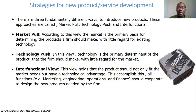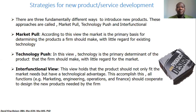The last one is the functional view, where it is a combination of the market pull and the technological push. This type of strategy is called the hybrid type. This view holds that the product should not only fit the market needs but also have the technological advantage. To accomplish this, all functions — that is, engineering, marketing, and operations — should cooperate and design the new product needed by the firm.